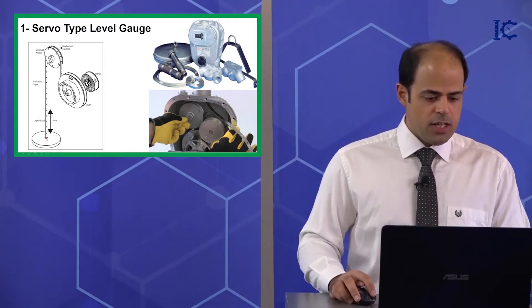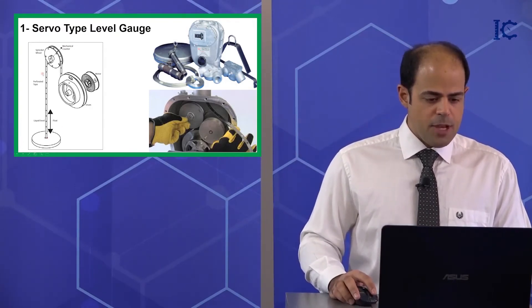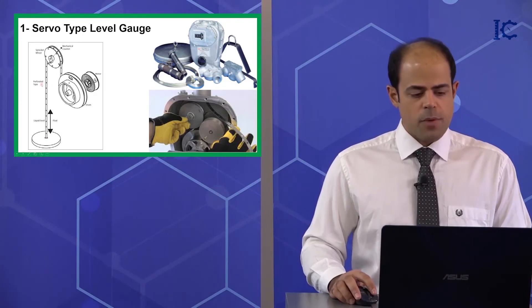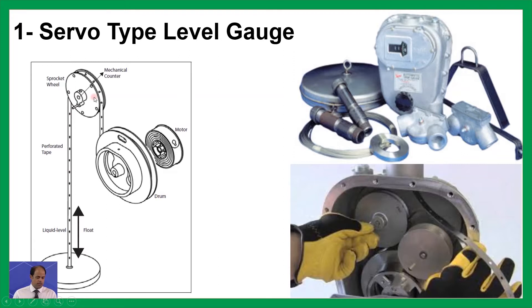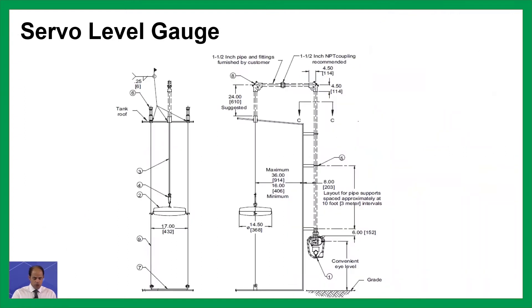Here you can see this is the flutter and this is the measuring tape. To some extent, it's a perforated tape due to having some holes, and you can see the sprocket and the other things which I previously discussed for you on the whiteboard.